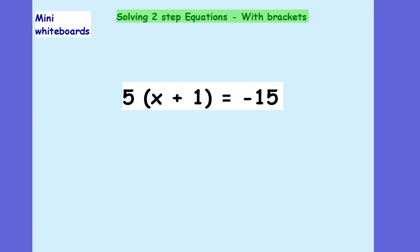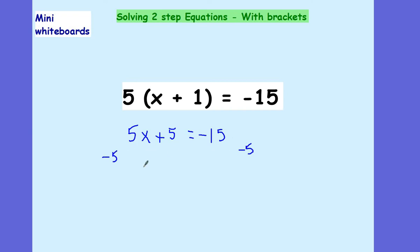How about now? What's changed? I've now got 5x plus 5 — that's stayed the same — equals negative 15. I now need to subtract 5 from both sides, which gives me that 5x is equal to negative 20. Then if I divide both sides by 5, this leaves me with x is equal to negative 4.